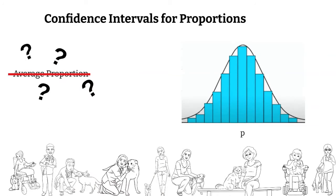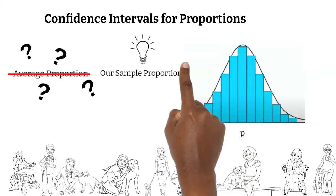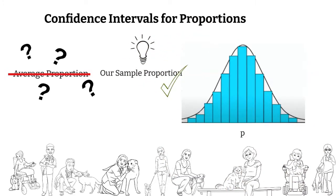But that's okay. We can survey just one sample and get useful information from our sample proportion. Instead of putting the average proportion at the center of our normal curve, we place our sample proportion, indicated by p-hat, in that position.